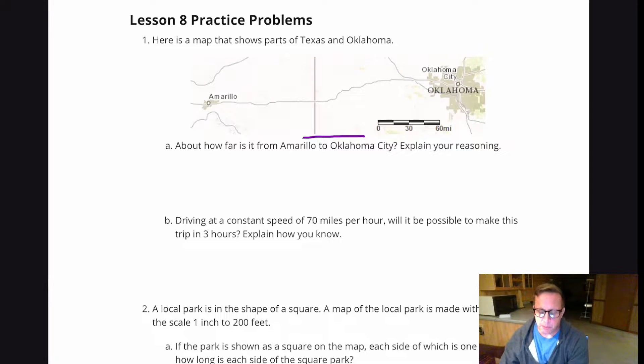For Lesson 8 practice problems, we've got a map that shows parts of Texas and Oklahoma. For Question A, it says about how far is it from Amarillo to Oklahoma City? Explain your reasoning.